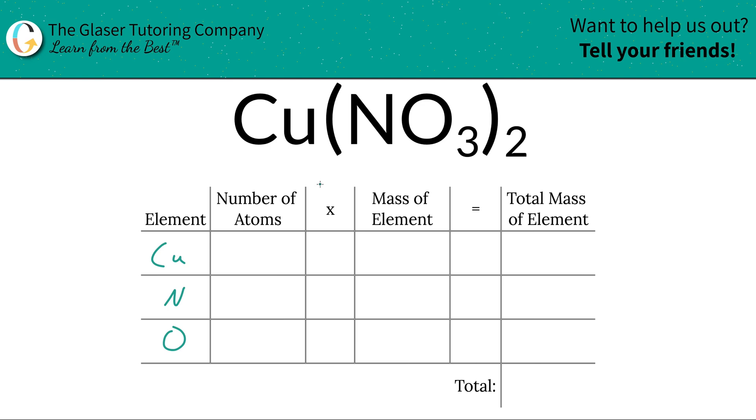Then next is to write down the number of atoms. That's where these subscripts come into play. So at the bottom of copper here, there's an invisible one. That means we have one copper atom. At the bottom of nitrogen, there is a one, but the problem is that nitrogen is tied up in the polyatomic anion nitrate. And you don't have one nitrate here, you have two of them. So if in each nitrate there's only one nitrogen, but you have two nitrates, there should be two nitrogens.